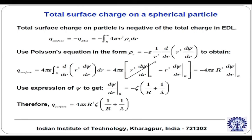The total surface charge on the particle was evaluated as the negative of the total charge in the EDL. That was evaluated by using the EDL potential distribution, and we got an expression for the total surface charge on the particle as a function of the zeta potential, which is given in the last equation of the slide.